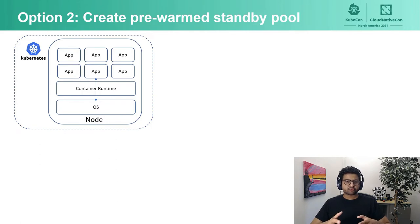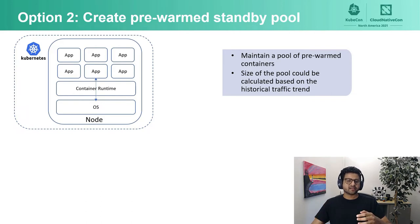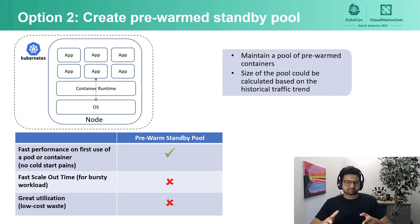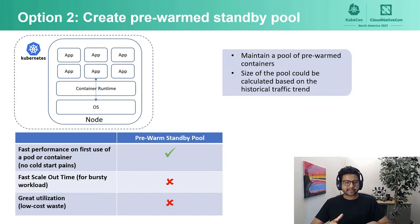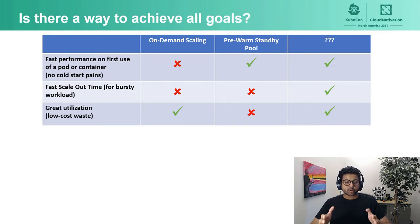How about we create a standby pool of pre-warmed containers? Basically, maintain a pool of pre-warmed containers, and the size of the pool could be calculated based on historical traffic trends. This does address the cold start pain — setting up of a container environment and initializing the application is done ahead of time. But it still suffers from handling sudden bursts in the workload. And since we are maintaining these pre-warmed pods, there would be a lot of waste in resources if these pods are sitting idle and traffic is slow.